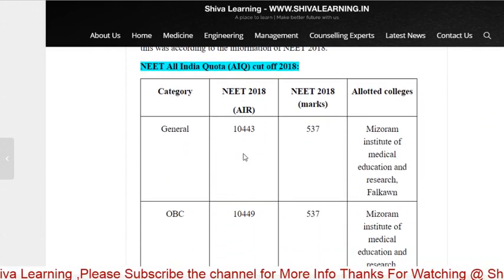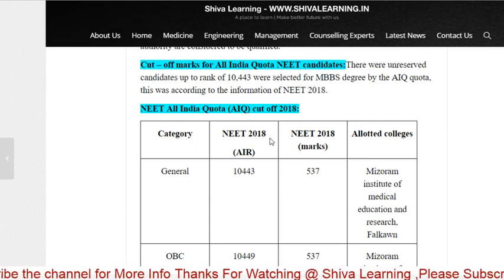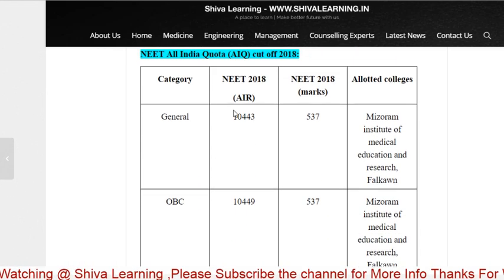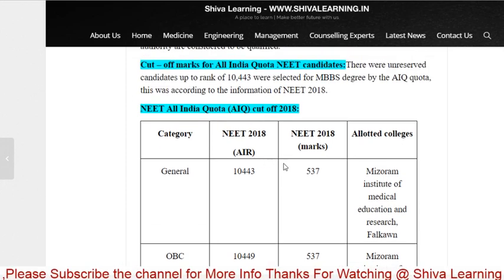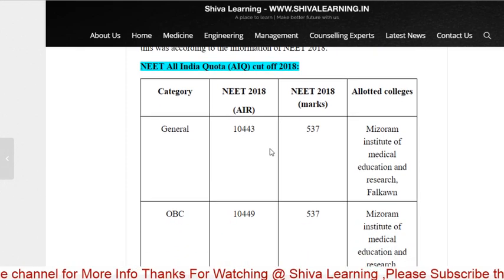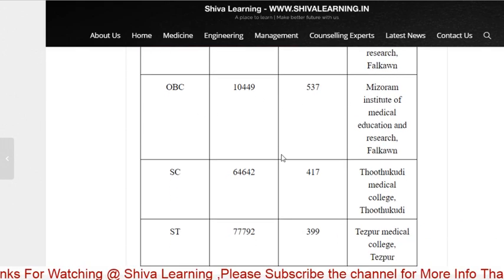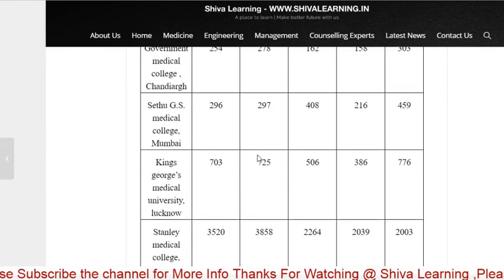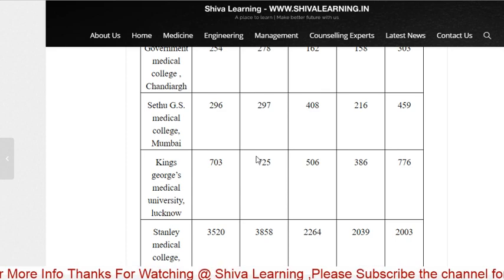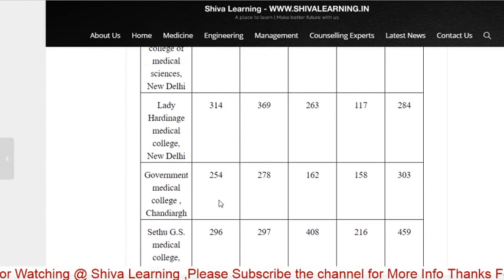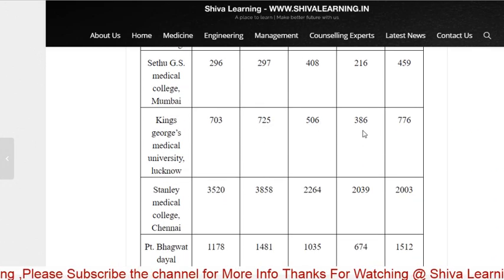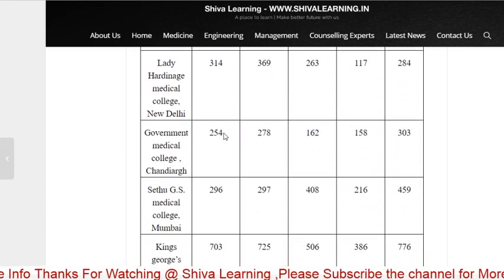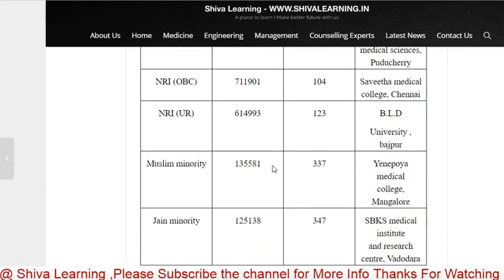There is also NEET All India Quota data — the 15% quota — which you can view institute-wise. For example, in Mizoram under the General category, a college was allotted at rank 10,443 with 537 marks. You can view OBC, SC, ST, OBC-PH categories similarly. For instance, King George Medical College was allotted at rank 703, with other colleges at 725, 506, 386, and 776 ranks. All this detail will be provided in PDF via the website link.